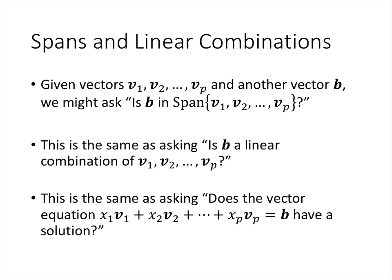So now that we know what the word span represents here, we can ask a question. When we have vectors v1 through vp and some other vector b, we could ask ourselves, well, is b one of those linear combinations? Is b in the span of v1 through vp? So that's the same as asking, is b a linear combination of the v's? And as we saw in a previous lecture, that's the same as asking, does the vector equation x1 v1 plus x2 v2 all the way up through xp vp equals b, does that vector equation have a solution? It's just three different ways of asking the same question.